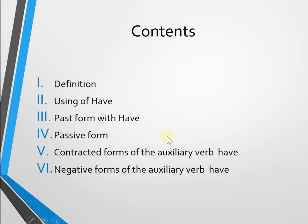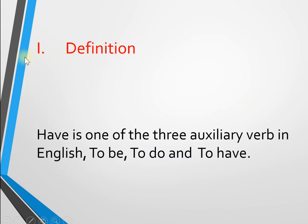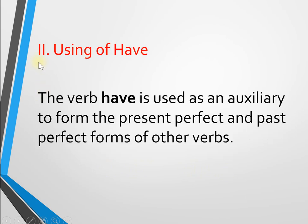Number one: definition of 'have'. 'Have' is one of the three auxiliary verbs in English — to be, to do, and to have.